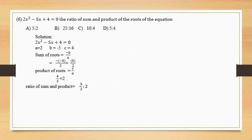So ratio of sum and product is equal to, the sum is 5 by 2 and product is 2. 5 by 2 is to 2. We have to find out the ratio of 5 by 2 divided by 2. So 5 by 2 into 1 by 2, that is 5 by 4.